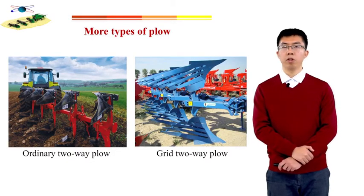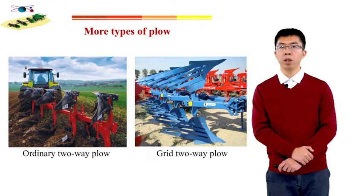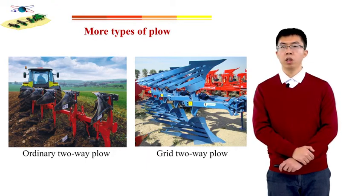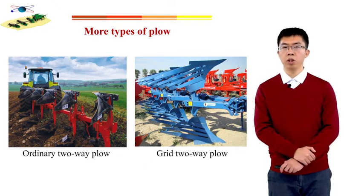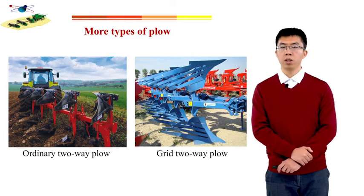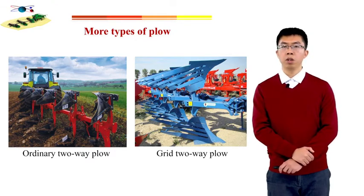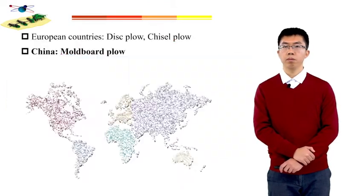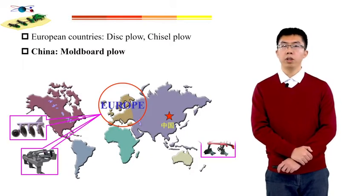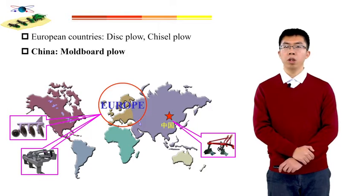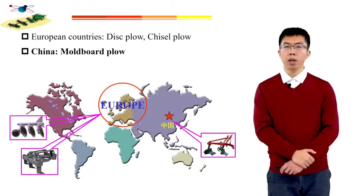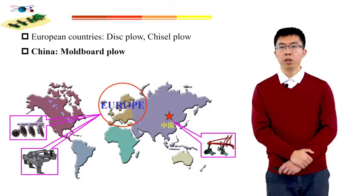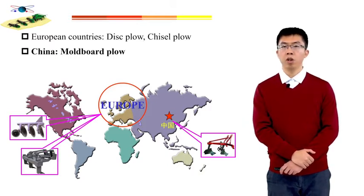According to different requirements of agricultural production, changes in natural conditions, power equipment, and other conditions, the moldboard plow has derived some new plows with modern characteristics, such as two-way plow, grid plow, modulation plow, roller plow, and high-speed plow. The disk plow and chisel plow are widely used in European countries. Although they are used in China, usage is relatively small. So in this chapter, we focus on the basic structure, working principle, and design analysis of the moldboard plow.